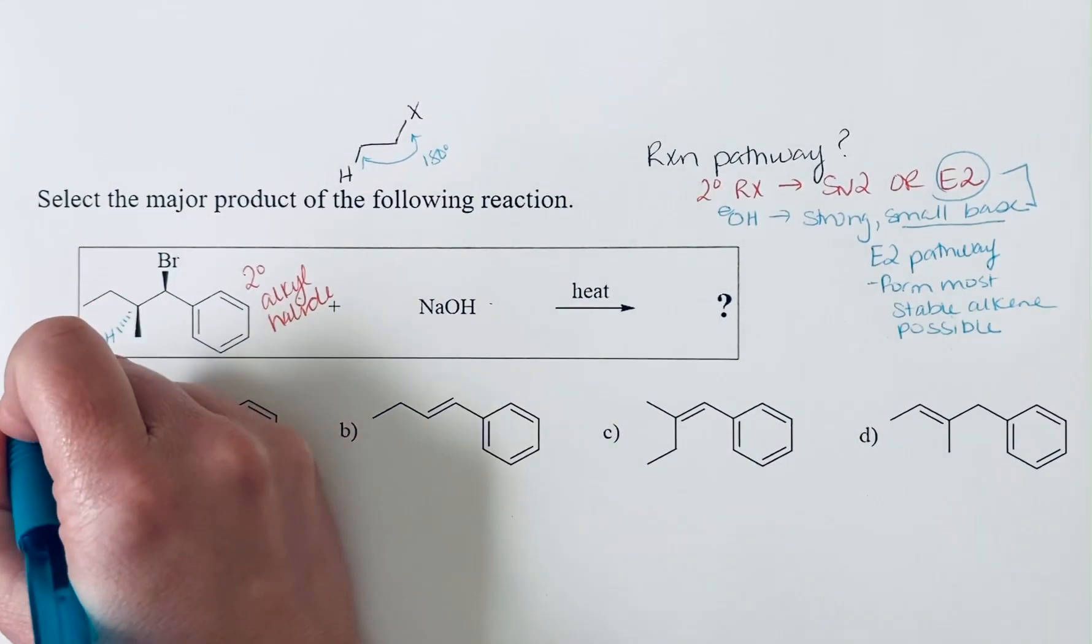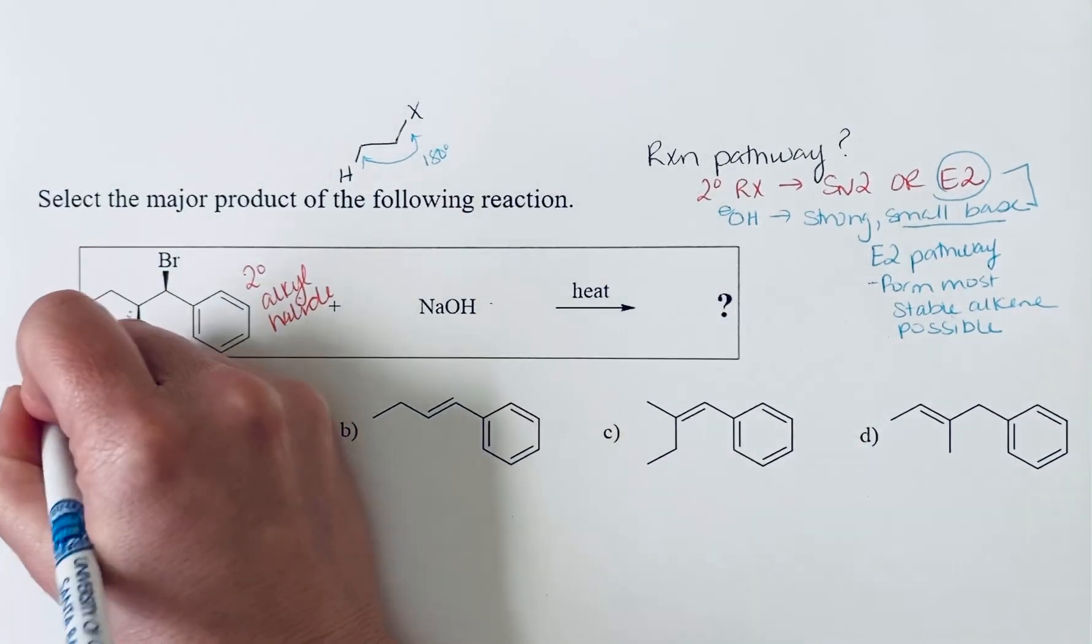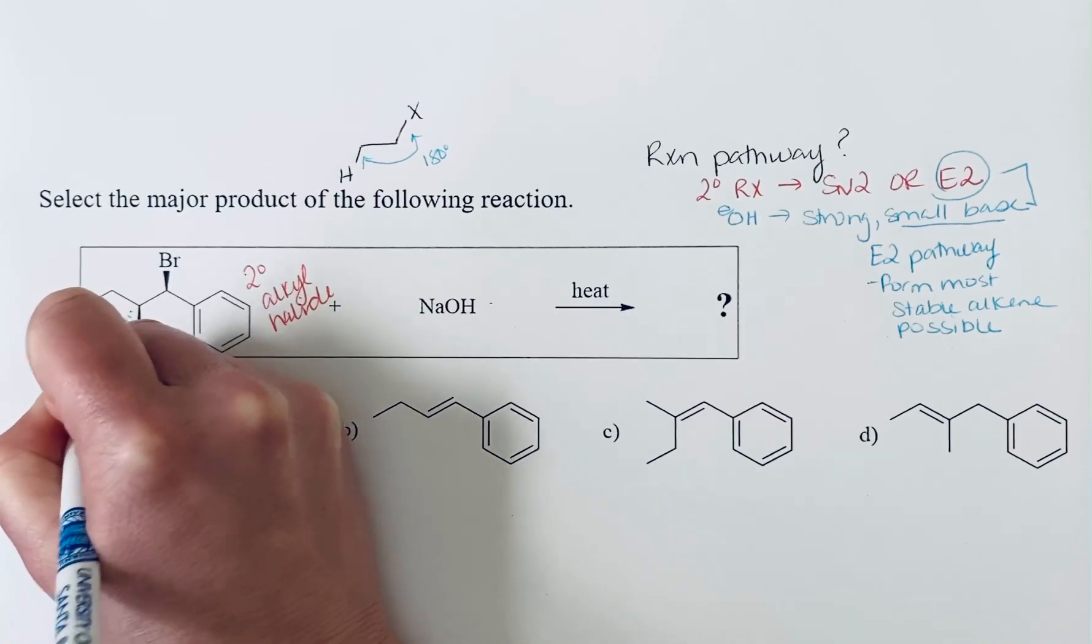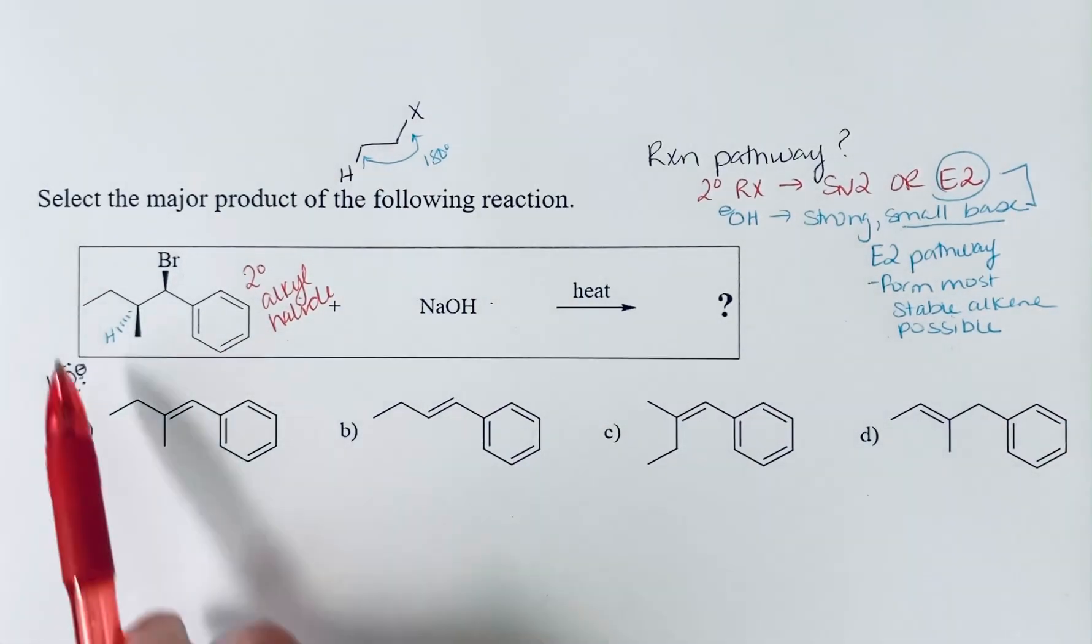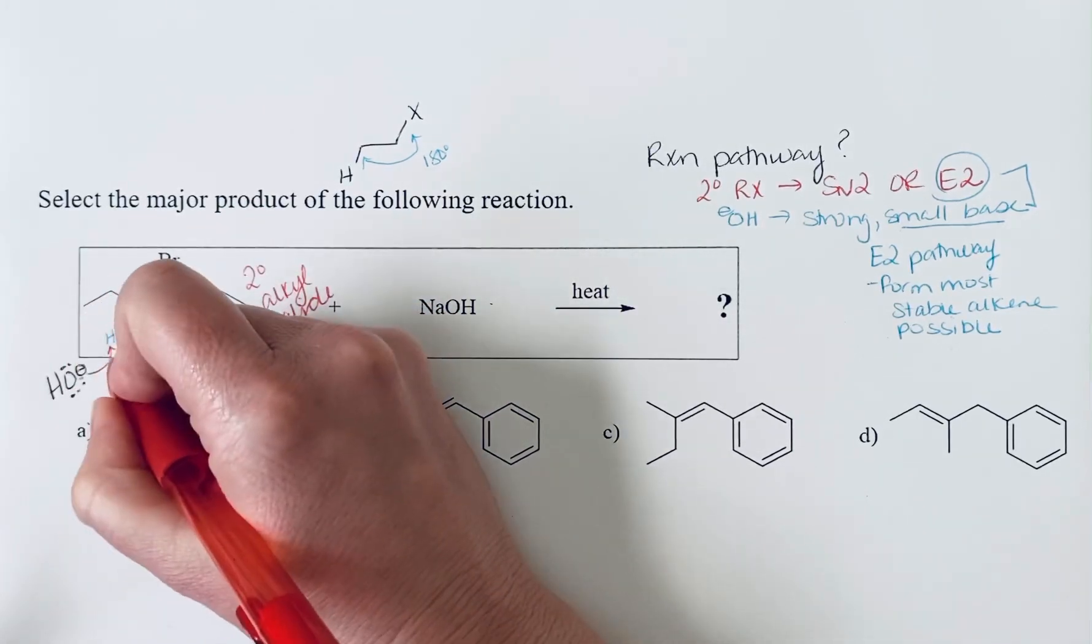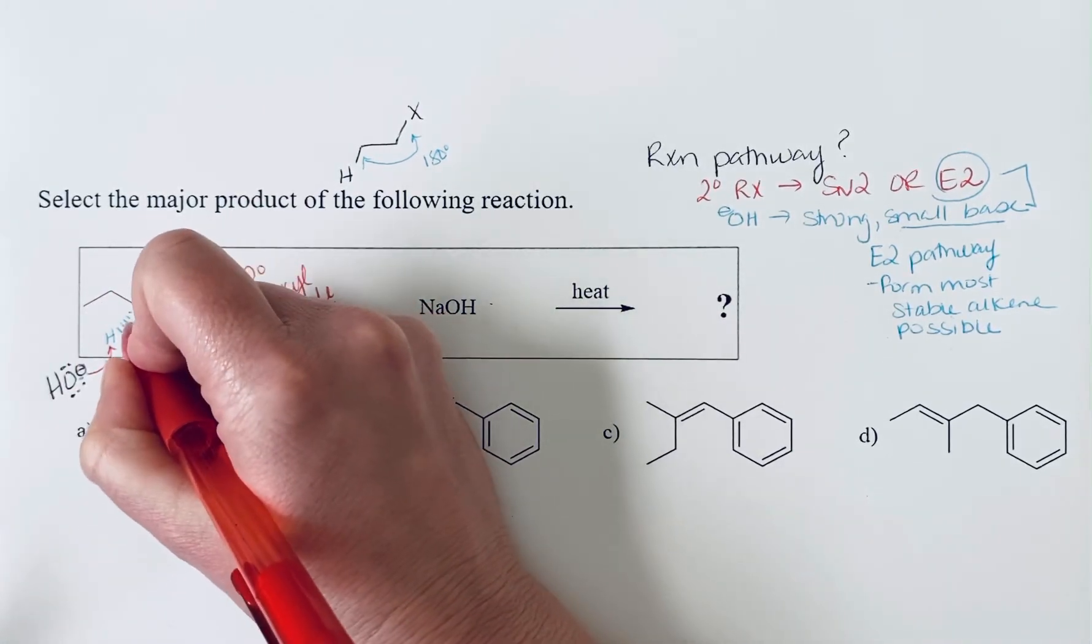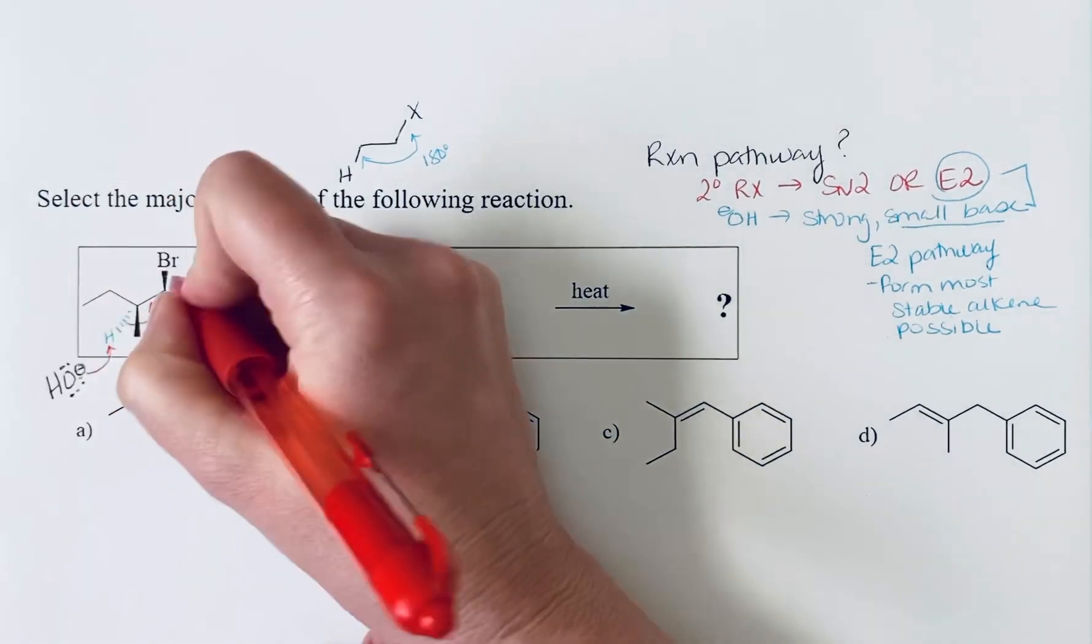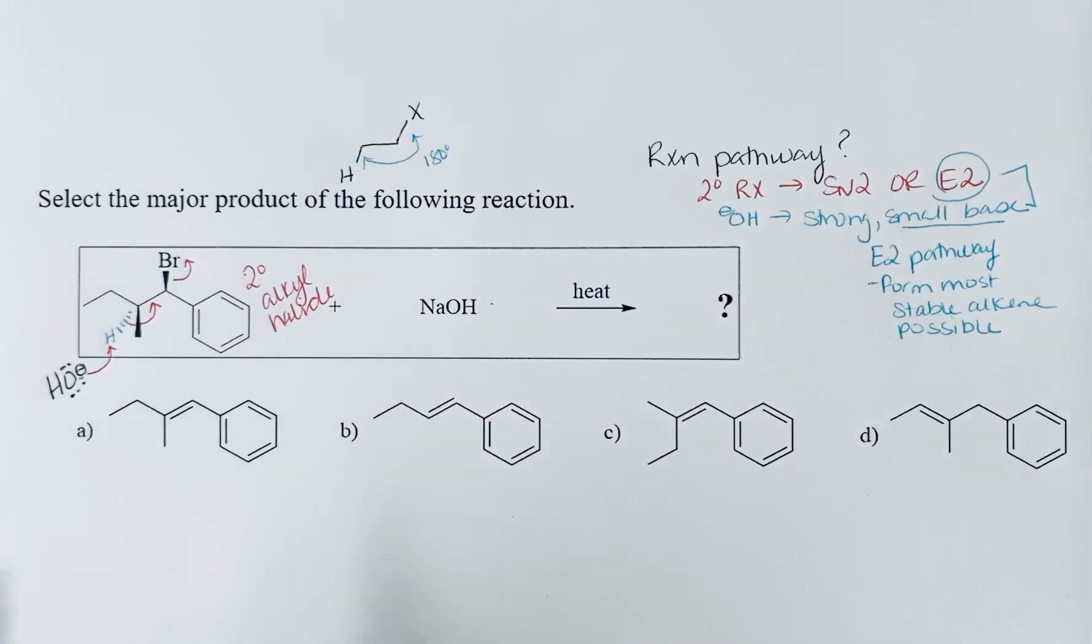So we can draw the hydroxide and show the reaction with this conformation of the alkyl halide. We're going to have the base remove the hydrogen, those electrons will come in to form the alkene, and this will push off the bromine.